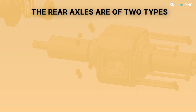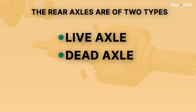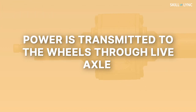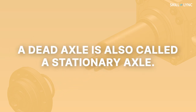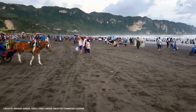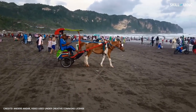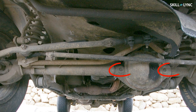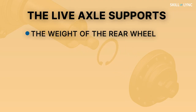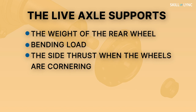The rear axles are of two types: live axle and dead axle. In the live axle, the power is transmitted to the wheels, whereas the dead axle simply supports the wheels. A dead axle is also called a stationary axle. A horse-driven vehicle has a dead axle which supports the rear weight of the vehicle. In a front-wheel drive car, the rear axle is the dead axle. Talking about the live axle, the differential is supported by the inner end of the live axle. The live axle supports the weight of the rear wheel, bending load, and also the side thrust when the wheels are cornering.